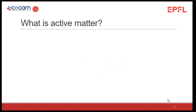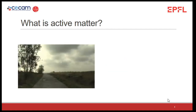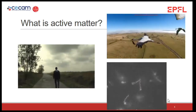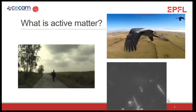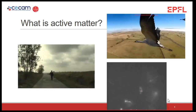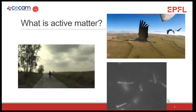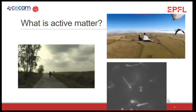What is active matter? Active matter is composed of units that constantly consume energy to do something, which can either be self-propulsion, self-division, or exerting forces. Examples include a person walking, a bird flying, or some bacteria swimming. These systems are living systems that are constantly consuming energy to self-propel.